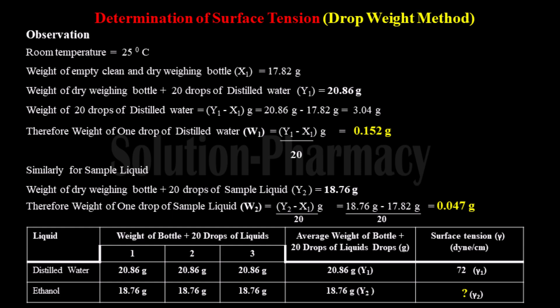After calculating the average weight, for distilled water the value is 20.86 grams (y1) and for ethanol the value is 18.76 grams (y2). We take these average values to calculate the weight of one drop of distilled water and one drop of sample liquid, which are then used to calculate the surface tension of the sample liquid, ethanol. The next column is for surface tension — the surface tension of the reference liquid is taken as the standard value.